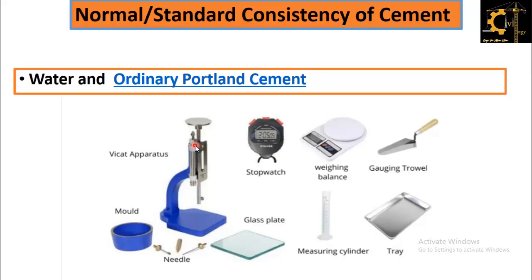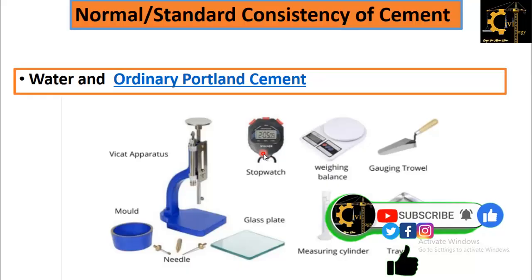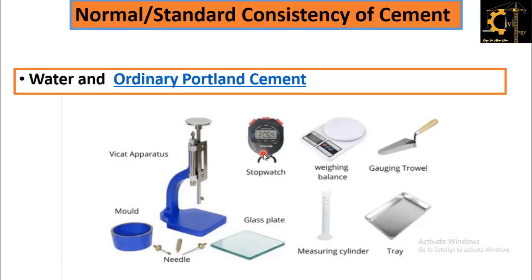The materials and equipment required for this test include mainly the Vicat apparatus, which includes needles for initial setting time, final setting time, and for the consistency test, a mold, and a glass plate. This glass plate should be non-porous and non-absorbent. A measuring cylinder is needed for the amount of water, and for weighing of cement we will use a weighing balance. A stopwatch is also necessary because we have to note down the gauging time — the penetration of the plunger should be 9 to 11 mm in 30 seconds.